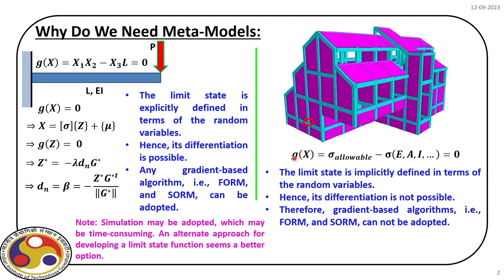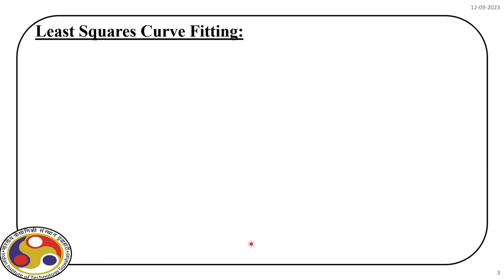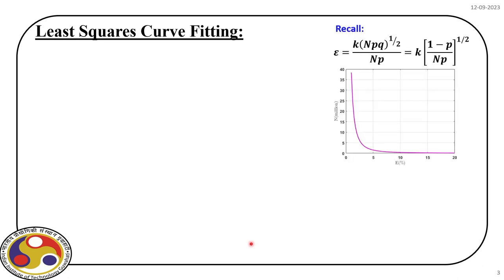For problems with implicitly defined limit states, we cannot use gradient-based reliability analysis. Instead, we try to develop a replica of the limit state that we can explicitly define in terms of the random variables. That function which replaces the original limit state is called the response surface or metamodel. Carrying out reliability analysis on that replicating function is metamodel-based reliability analysis, and we will develop this alternate approach in this module.